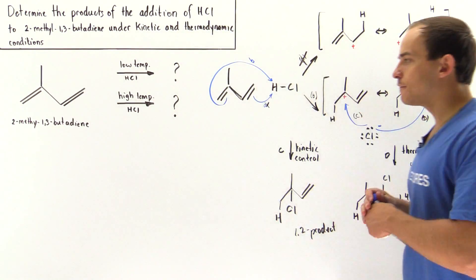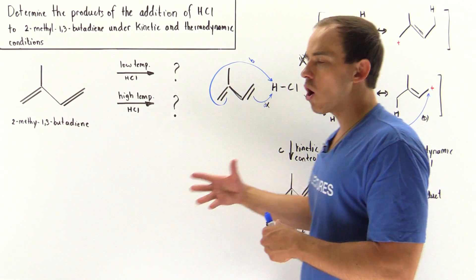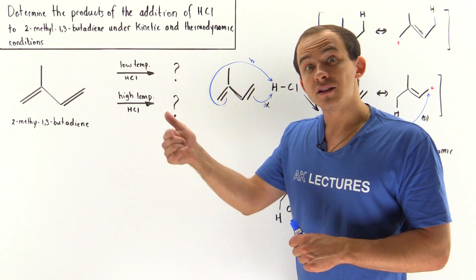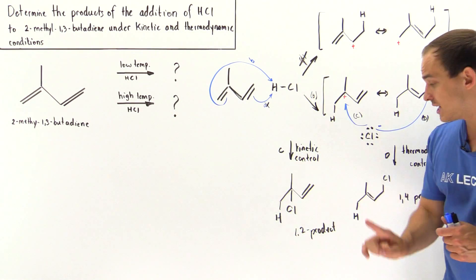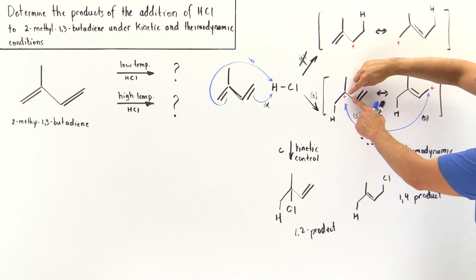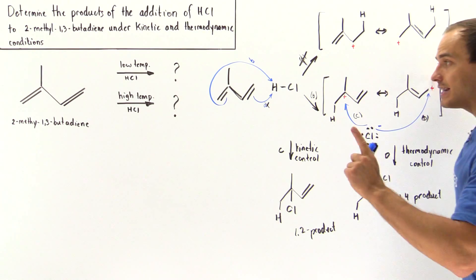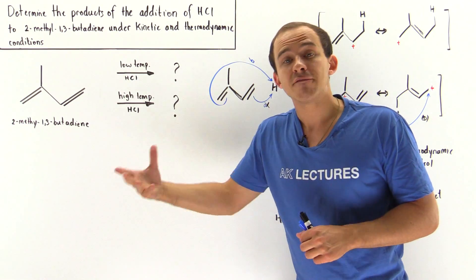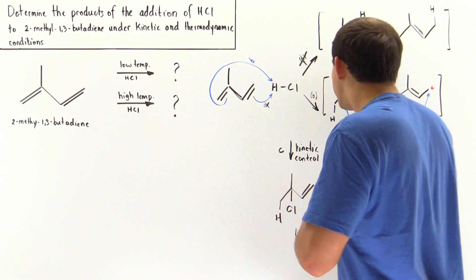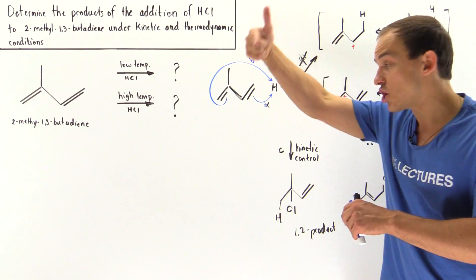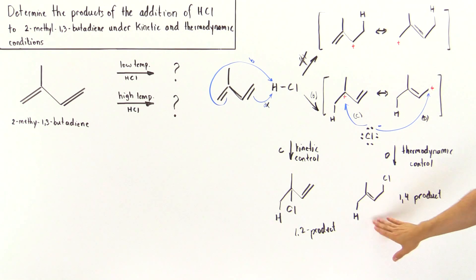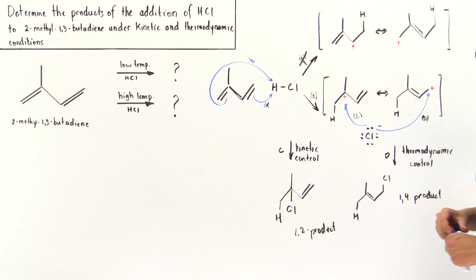Under certain conditions, a 1,3-diene can form one type of product predominantly or a different type. Under low temperature conditions, kinetics takes over and we form the less stable 1,2-product because it has a lower activation energy and because the Cl is found closer to that carbon. Under high temperature conditions with enough time — thermodynamic conditions — we have enough energy to pass the activation barrier and the Cl has enough time to migrate all the way across, forming the more stable 1,4-addition product.